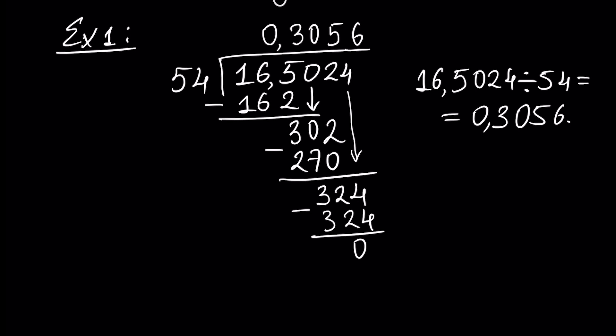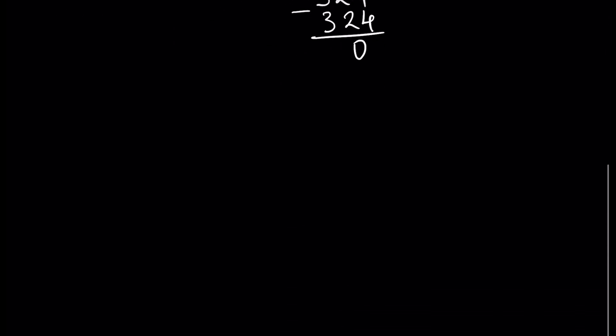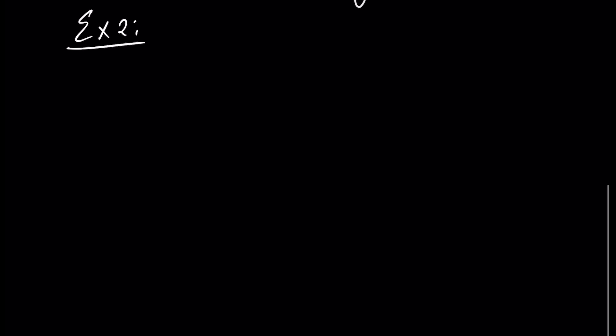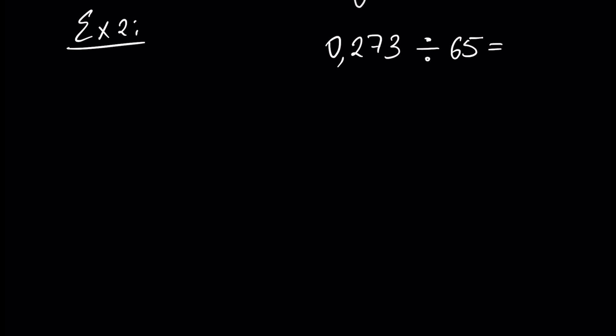Let's solve our next problem. Example number 2: let's divide 0.273 by 65. In the first examples we assume that we divide by an integer number, and then I will give you the general case.